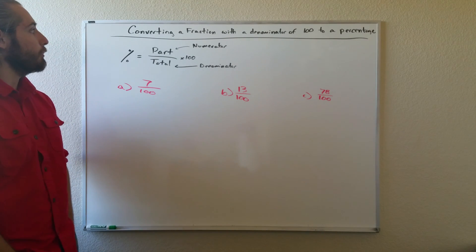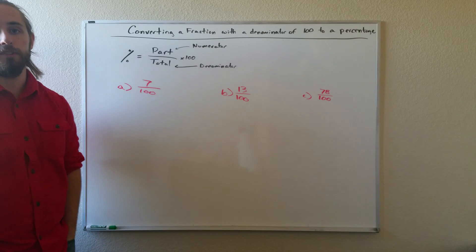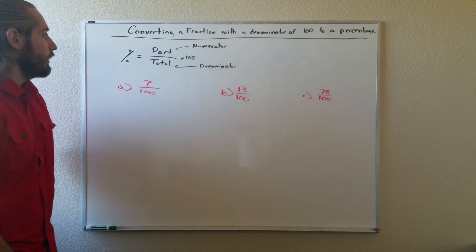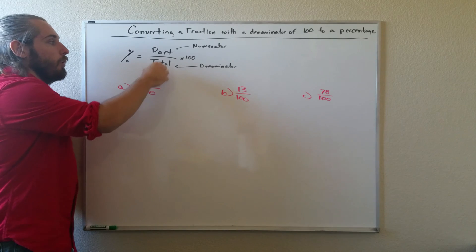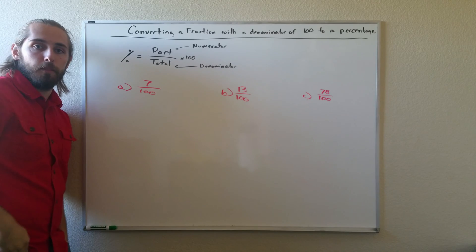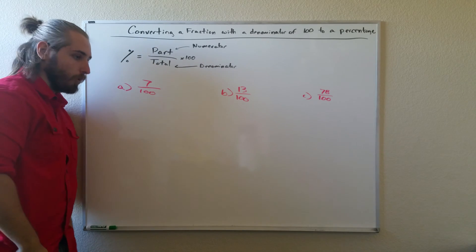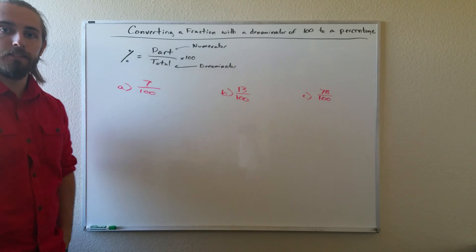Hey guys, this topic is converting a fraction with a denominator of 100 to a percentage. How we calculate a percentage is part over total, where the part is the numerator and the total is the denominator. We just multiply that by 100. When working with percentages, these are probably going to be your easiest problems.